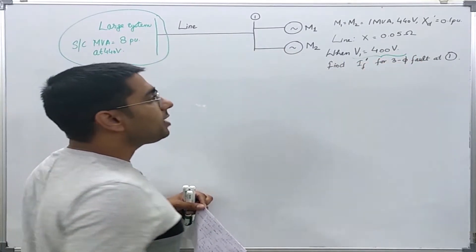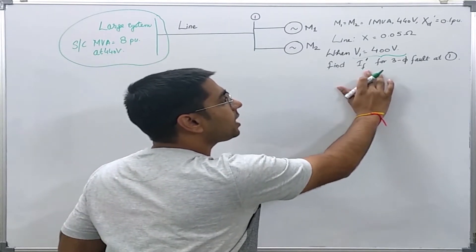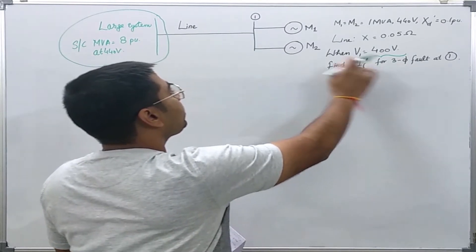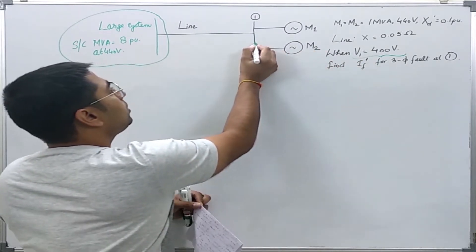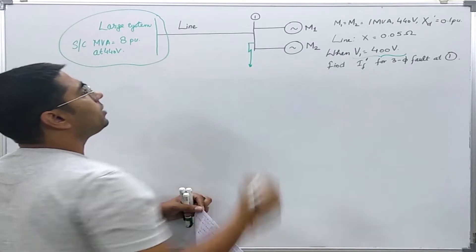The voltage at bus 1 is 400 volts. We are asked to find the transient fault current for a three-phase fault at bus 1.